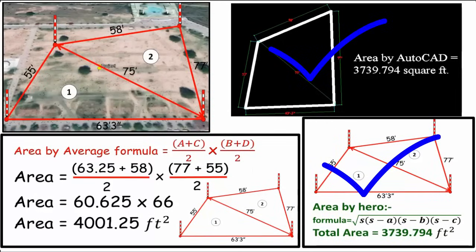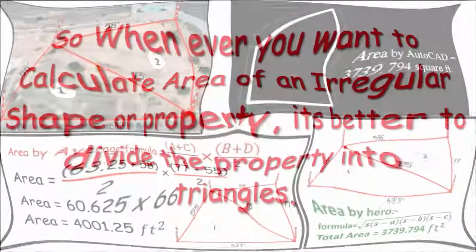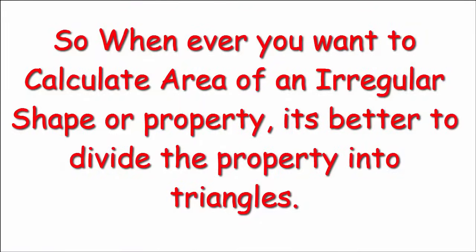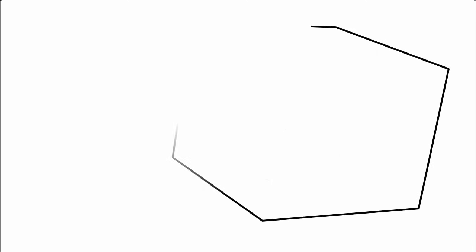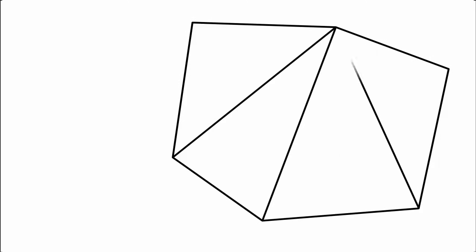Whenever you want to calculate area of an irregular shape, the best thing is to split the whole property into triangles and then calculate area of each triangle. After that, you can add them together to get the whole property area. That's it.